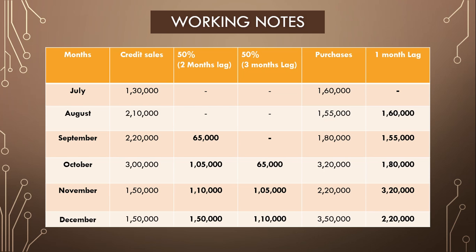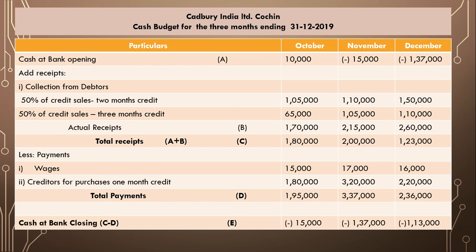We concentrate only on October, November, and December figures. For 50% portion: October = 1,05,000; November = 1,10,000; December = 1,50,000. For remaining 50%: October = 65,000; November = 1,05,000; December = 1,10,000. Adding both portions: October total = 1,70,000; November total = 2,15,000; December total = 2,60,000.